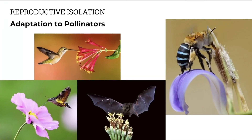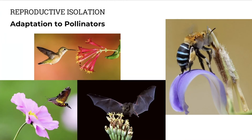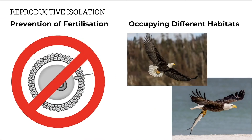Plants also have ways of keeping species separate — they are adapted to particular pollinators. They may have specific structures adapted for a particular pollinator, ensuring pollination only occurs between the same species. Other animals can prevent fertilisation if their reproductive organs are not compatible or the gametes can't fuse. Another way species can remain separate is by occupying different habitats. For example, the bald eagle and the fish eagle live in the same area but occupy different niches or roles, so they don't meet, they don't mate, they become separate.